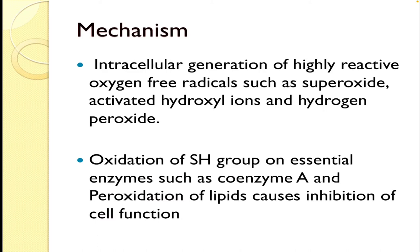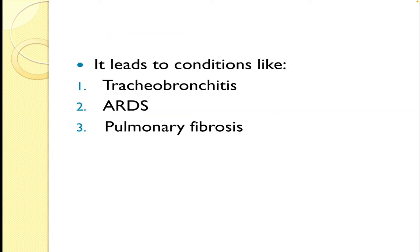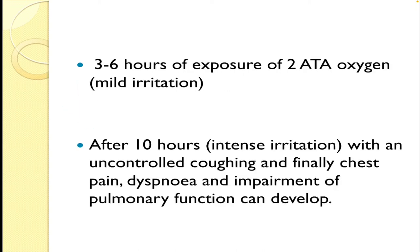The mechanism is similar — the intracellular generation of highly reactive oxygen free radicals such as superoxide, activated hydroxyl ions, and hydrogen peroxide. This oxidation of the SH group of essential enzymes such as coenzyme A, and peroxidation of lipids, causes inhibition of cell function. It leads to conditions like tracheobronchitis, acute respiratory distress syndrome, and pulmonary fibrosis. In general, 3 to 6 hours of exposure to 2 atmospheres of oxygen causes mild irritation, whereas after 10 hours, intense irritation with uncontrolled coughing and finally chest pain, dyspnea, and impairment of pulmonary function can develop.